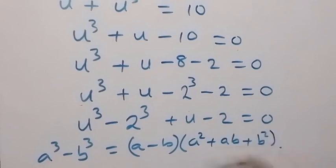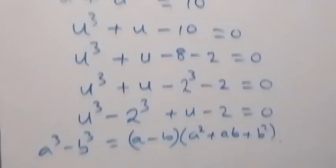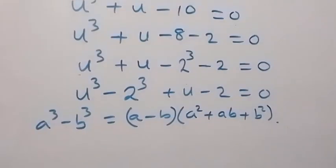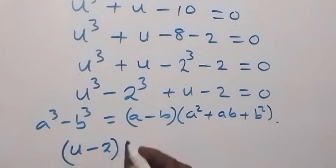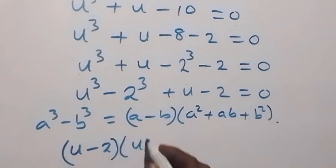Following this pattern, we have u raised to power 3 minus 8, which is u minus 2, then into bracket u squared plus 2u plus 4.